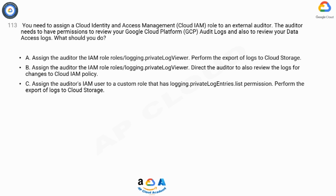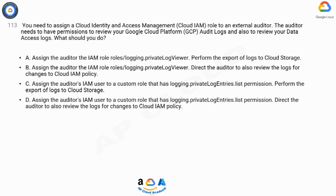Option C: Assign the auditor's IAM user to a custom role that has the logging.privateLogEntries.list permission, and perform the export of logs to Cloud Storage. Option D: Assign the auditor's IAM user to a custom role that has the logging.privateLogEntries.list permission, and direct the auditor to also review the logs for changes to Cloud IAM policy.